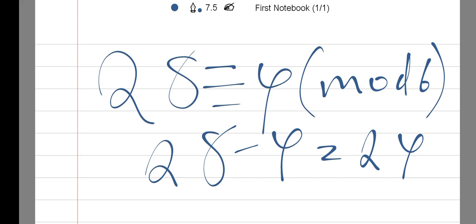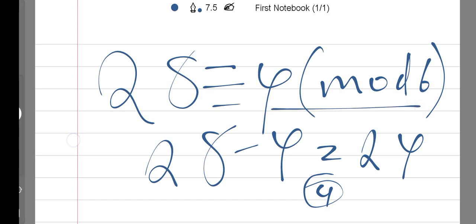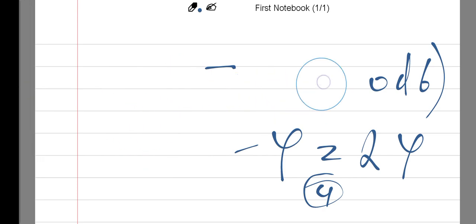So you can see that 28 minus 4 - these are the numbers that are congruent of mod 6. The other example we have here is 6 congruent 0 in mod 6.